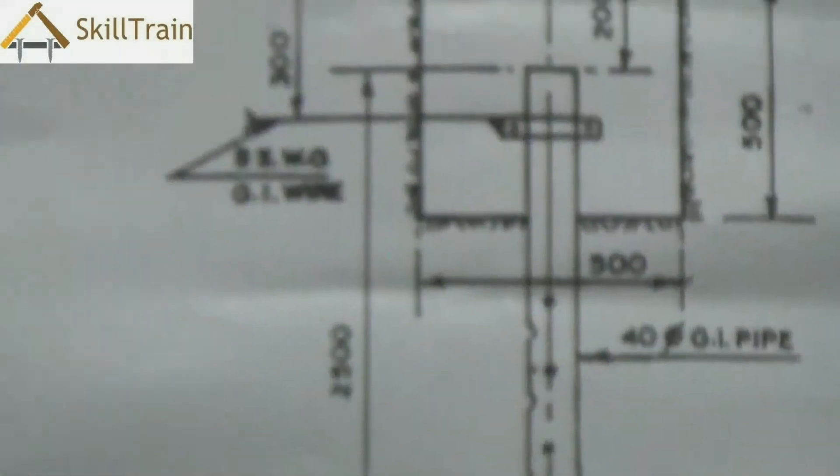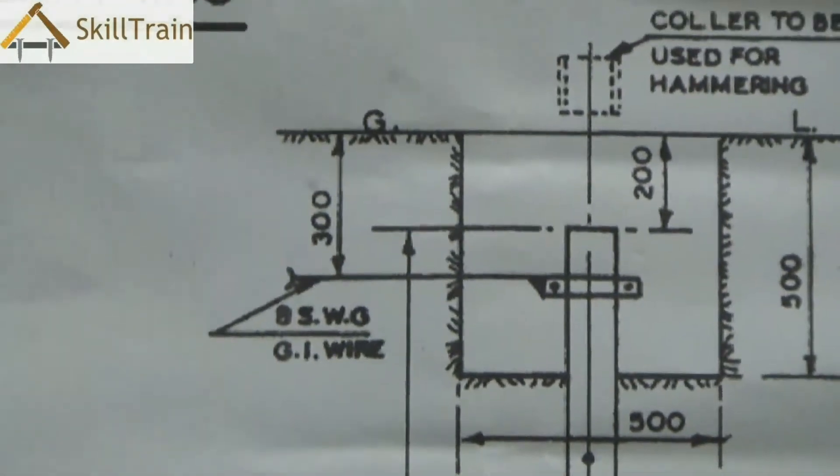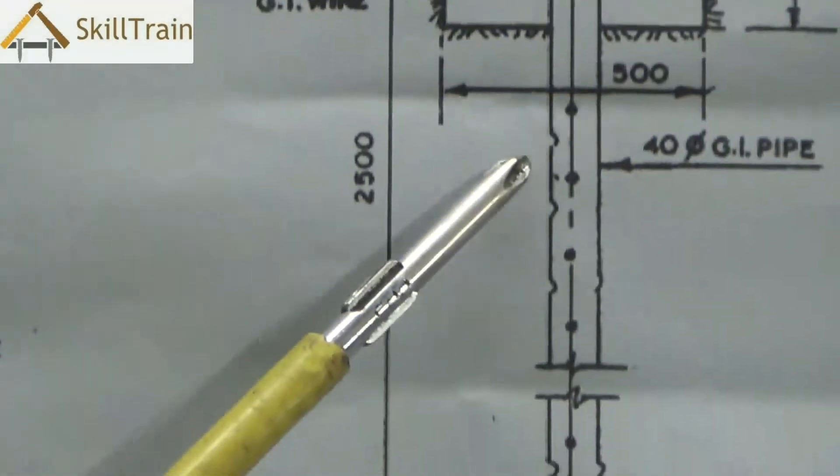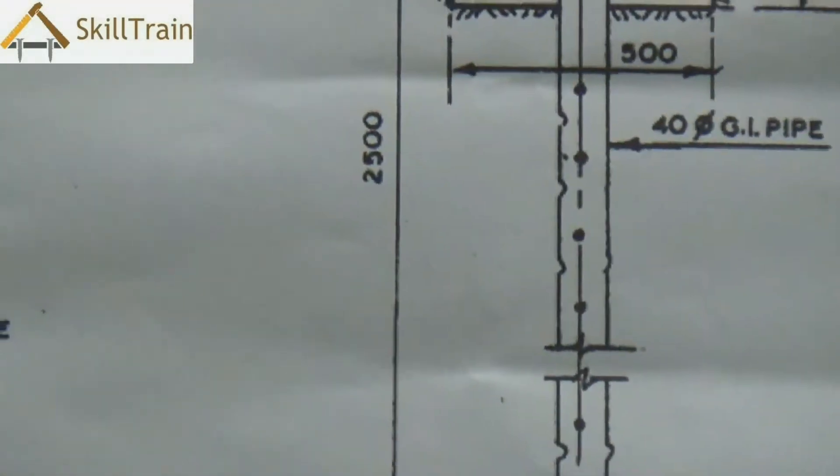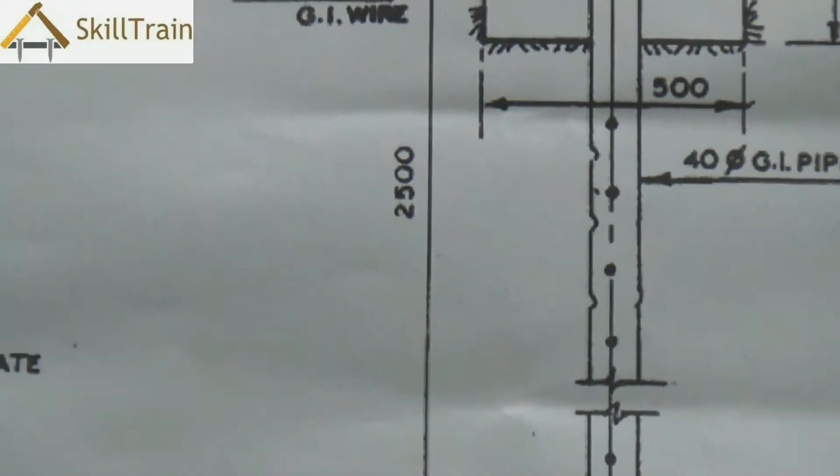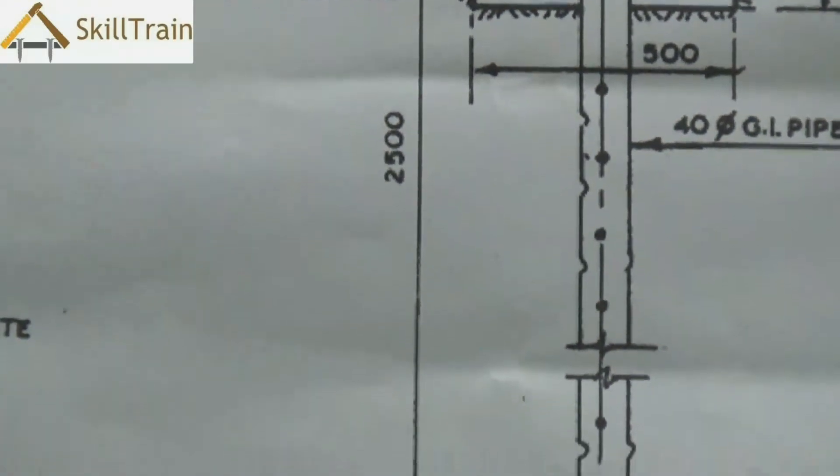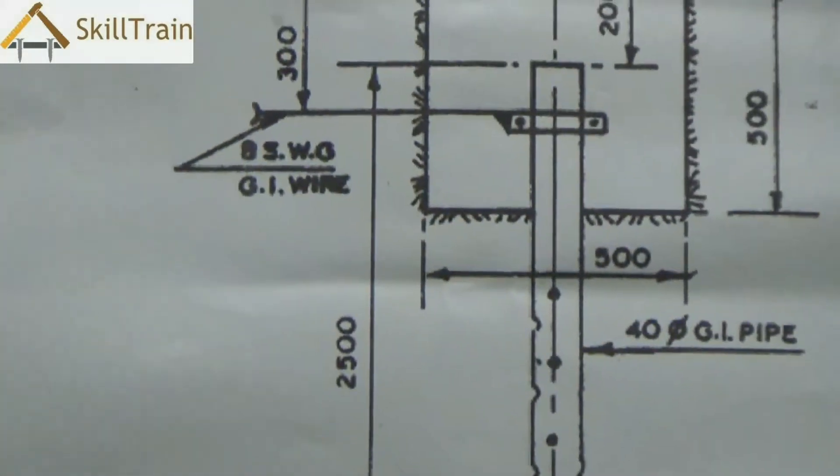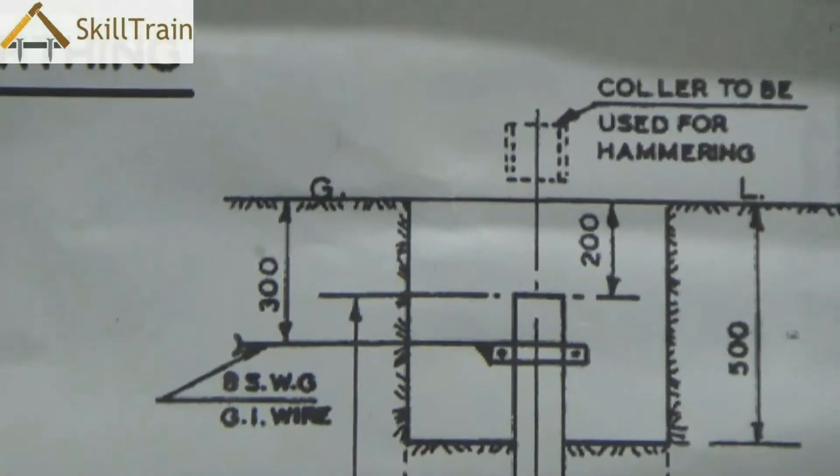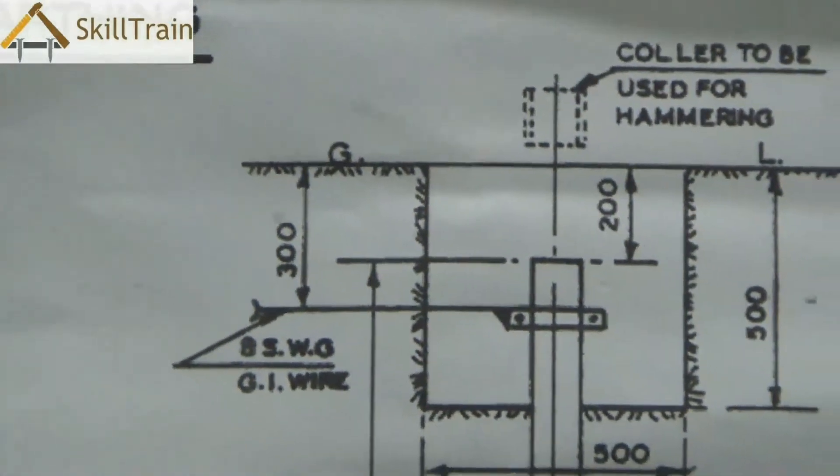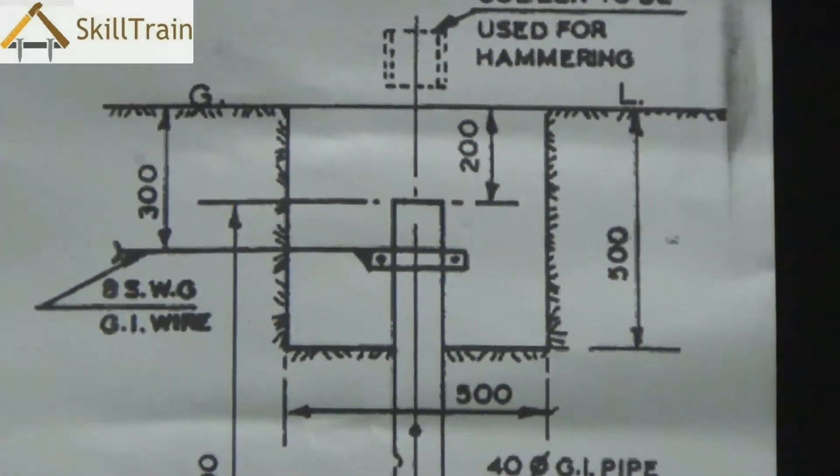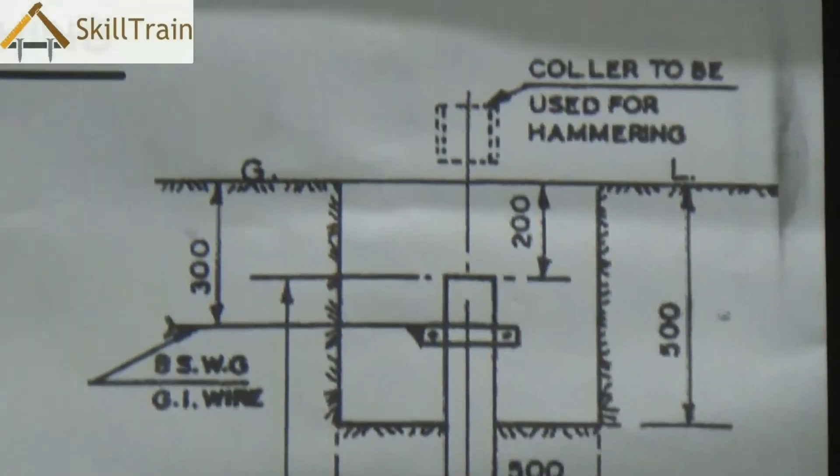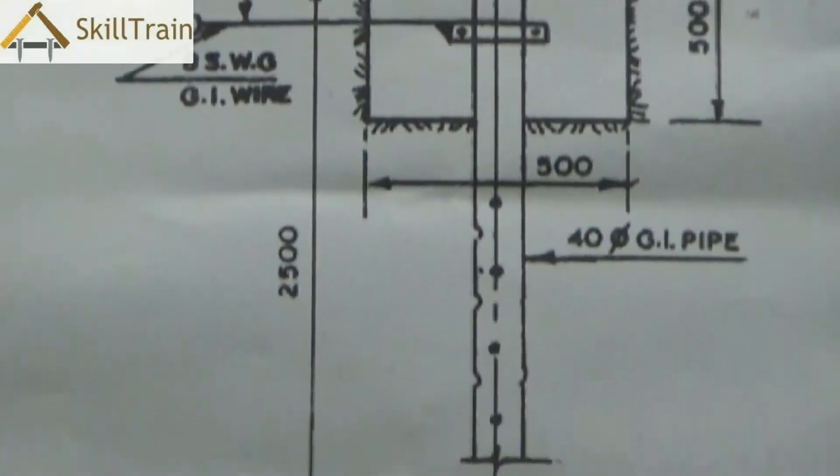In such a case we take a GI pipe about 40 millimeters diameter and thrust this pipe into the soil for at least four or five feet. It can be higher as well depending on how the soil is. Once you feed this in, there's a clamp on top where the GI wire is connected to the mains.